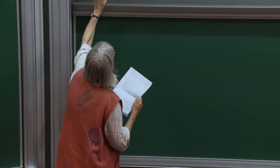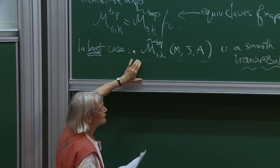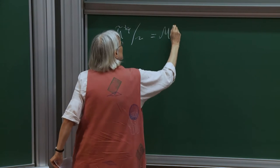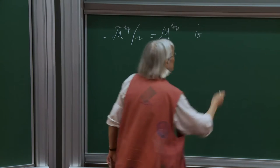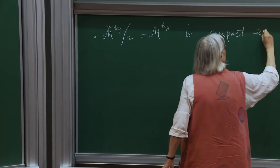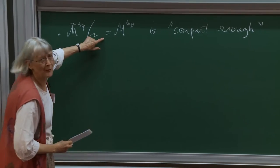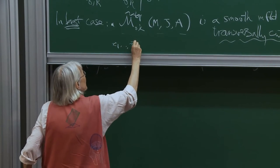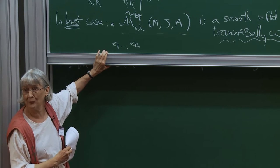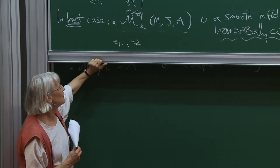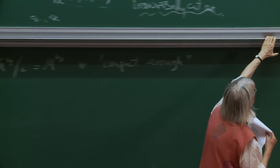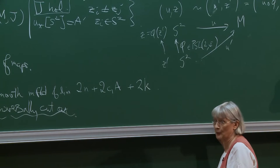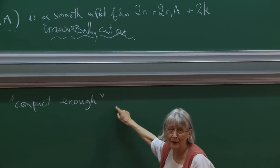Why you want it transversely cut out is that there's a Fredholm theory, meaning if you vary J, the space won't change very much. So in the best case, this is a nice manifold. What we're really interested in is the quotient space M⁰ᵏ — it's almost never compact, but it's compact enough. It's almost never compact because the points z₁ through zₖ must be distinct, so two could come together. Also, the group of equivalences PSL(2,ℂ) is not compact, which can cause problems.